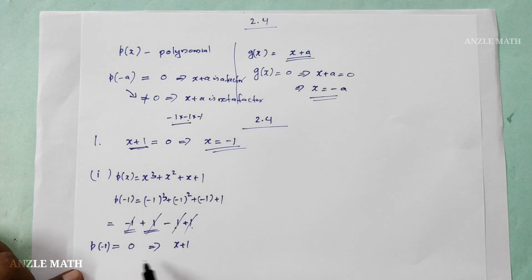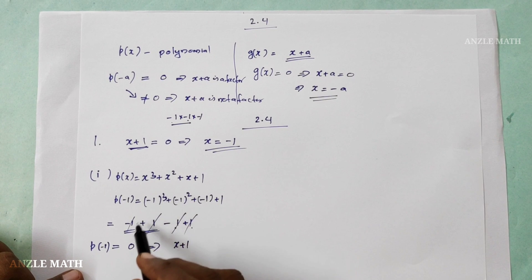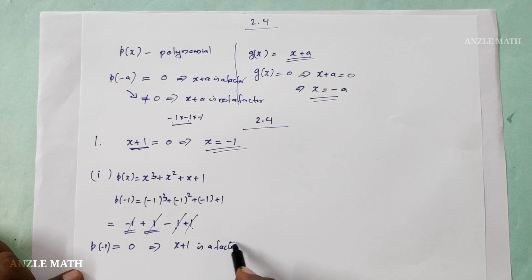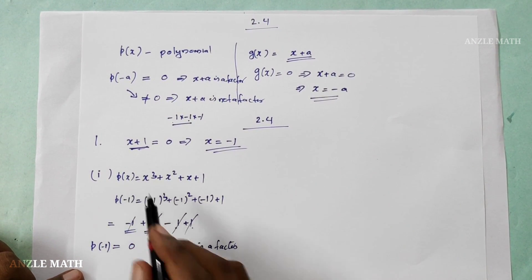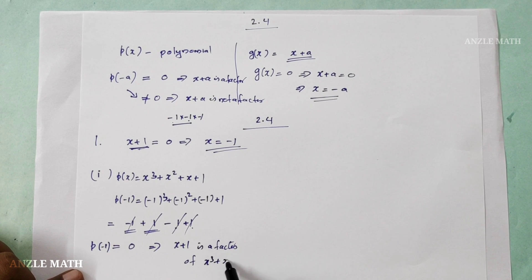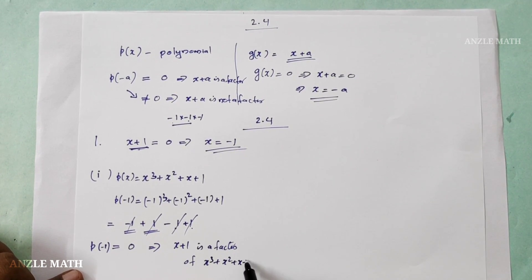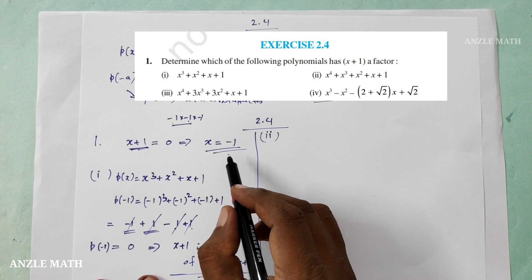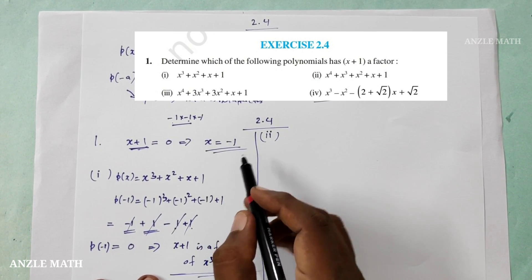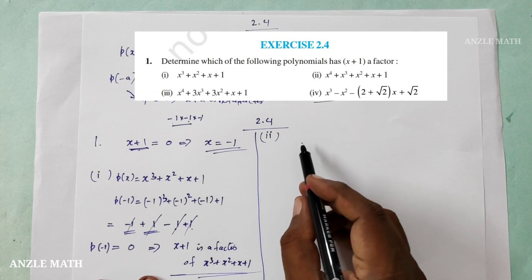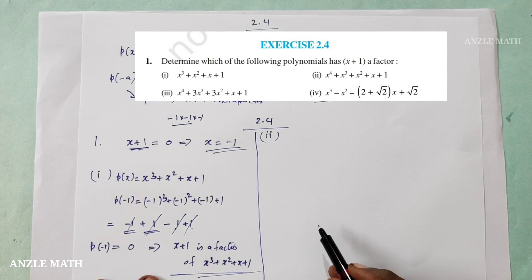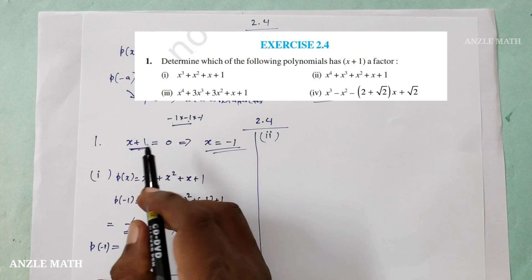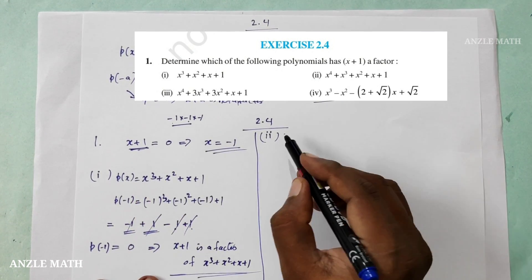So p of minus 1 is equal to 0, therefore x plus 1 is a factor of p of x, where p of x is equal to x cubed plus x squared plus x plus 1. Now we will determine which of the following polynomials has x plus 1 as a factor. Let's look at examples to determine the arguments.